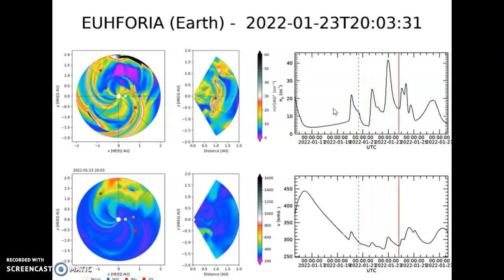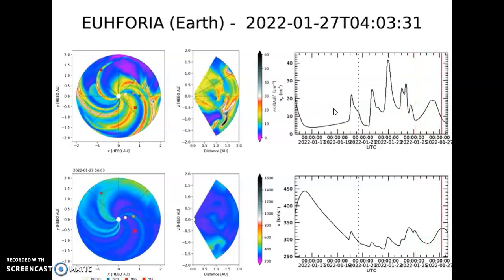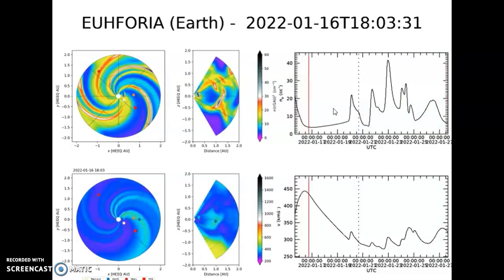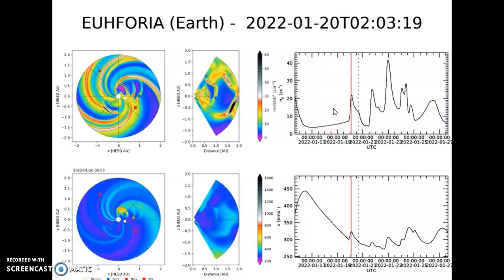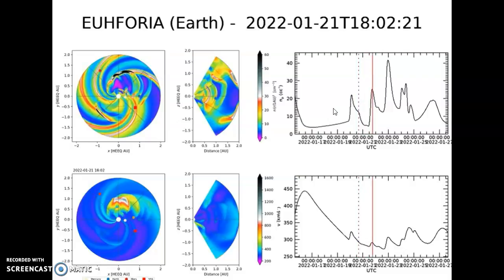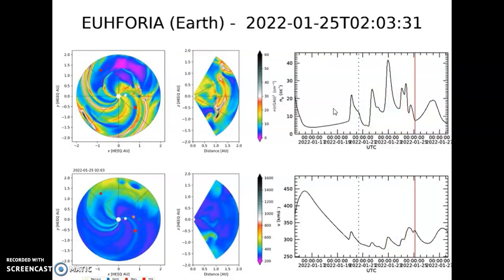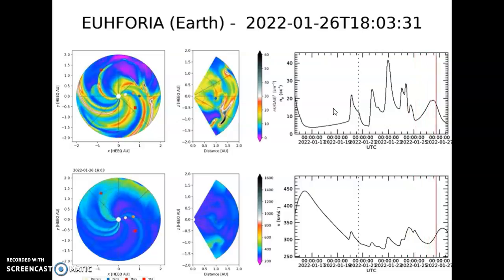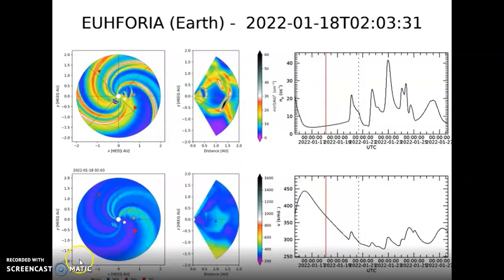Now, you would think with all the C-flares and M-flares that have shot off towards our planet, which I will show you right now over the last seven days, that we would be facing some plasma or solar storms. And we are. But they're not being reported by NOAA, ladies and gentlemen.